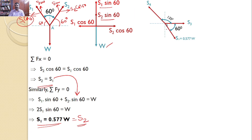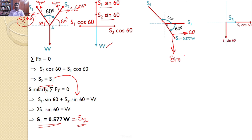Similarly, considering the free body diagram at B: S3 is horizontal, but S1 and S4 are inclined forces that need to be resolved. S1 makes an angle of 60 degrees with the horizontal, so its horizontal component is S1 cos 60 and vertical component is S1 sin 60. S4 makes an angle of 45 degrees with the horizontal, so its horizontal component is S4 cos 45 and vertical component is S4 sin 45.